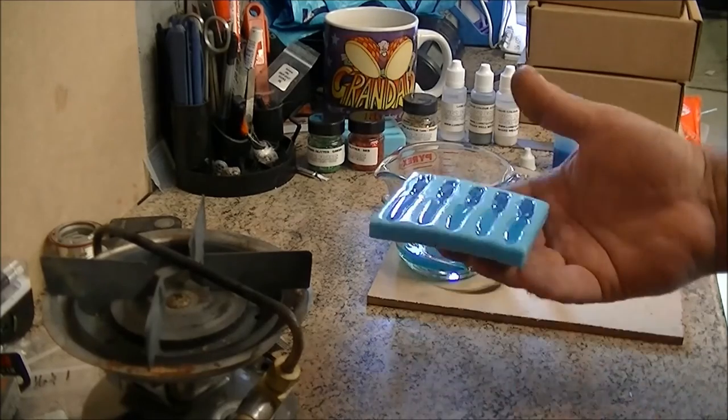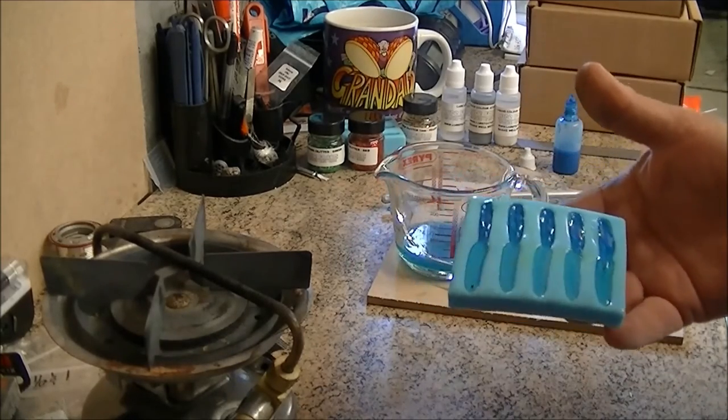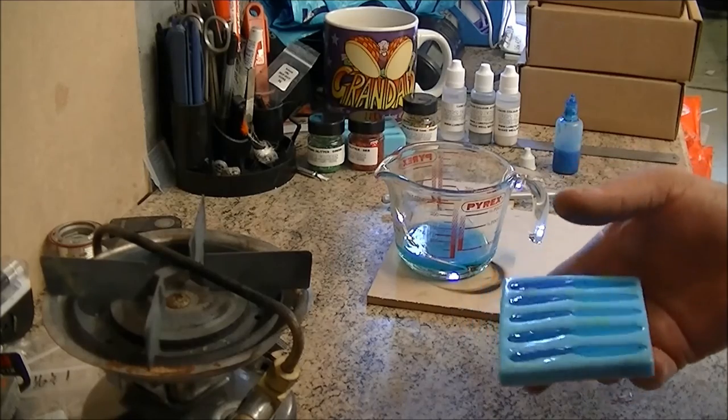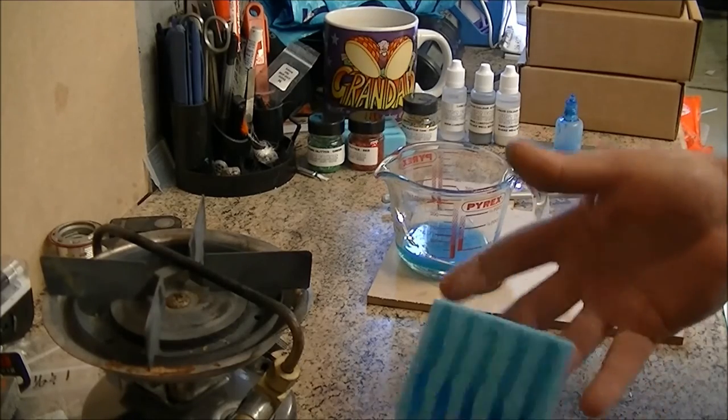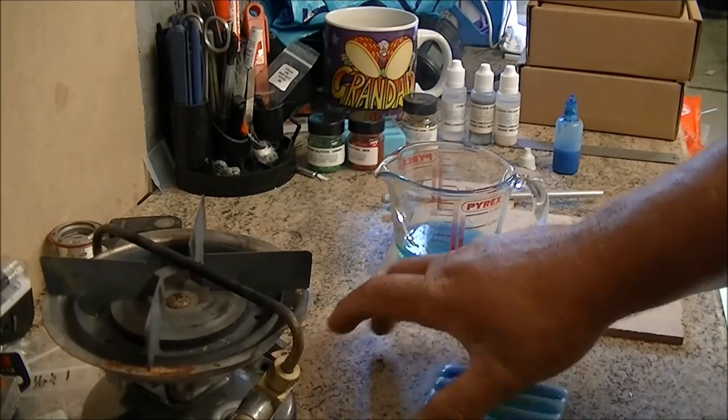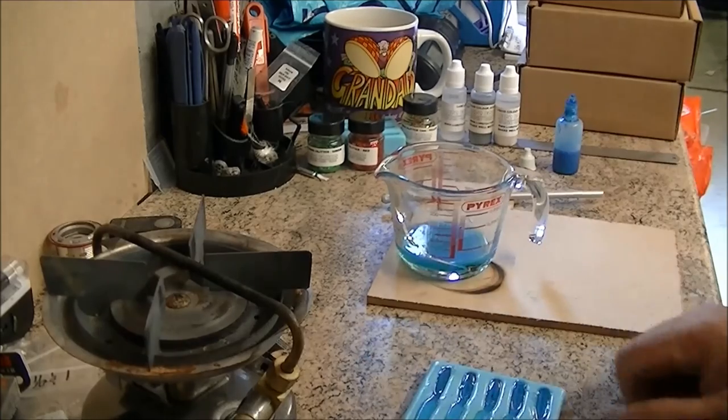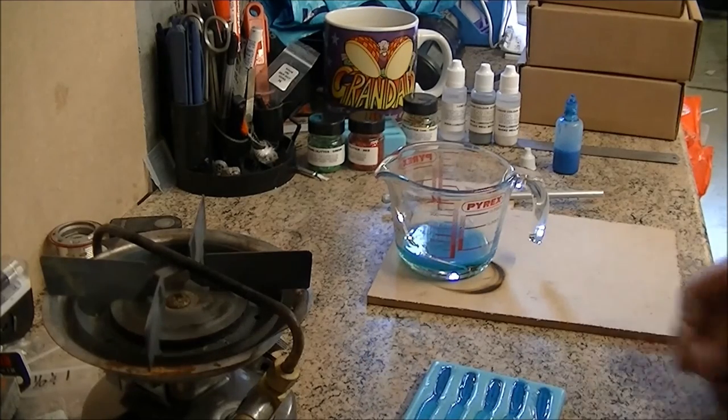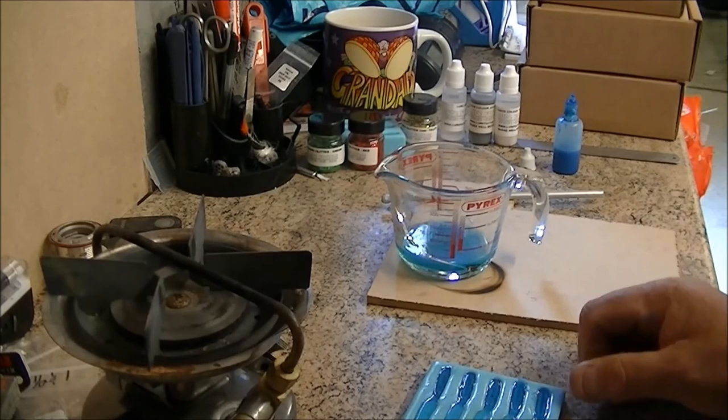But when it's done, there you go. You've got some shads made. They just need to cool a couple of minutes and go and catch some fish on them. But that is how you melt Lowflex in a jug on a Coleman stove.